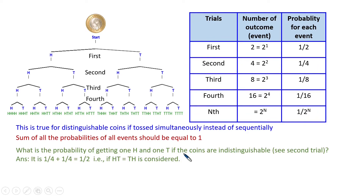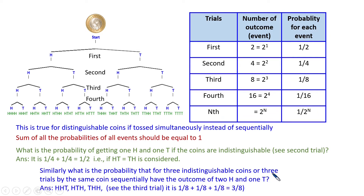What is the probability of getting one head and one tail if the coins are indistinguishable? Whether you toss two coins or toss sequentially, that is one head and one tail. Each event has probability one by four. The probability of getting one head and one tail will be one by four plus one by four, equal to half — if head-tail and tail-head are considered the same. For three indistinguishable coins, having the outcome of two heads and one tail: you can have HHT, HTH, or THH. The probability of getting two heads and one tail is one by eight plus one by eight plus one by eight, which is three by eight.